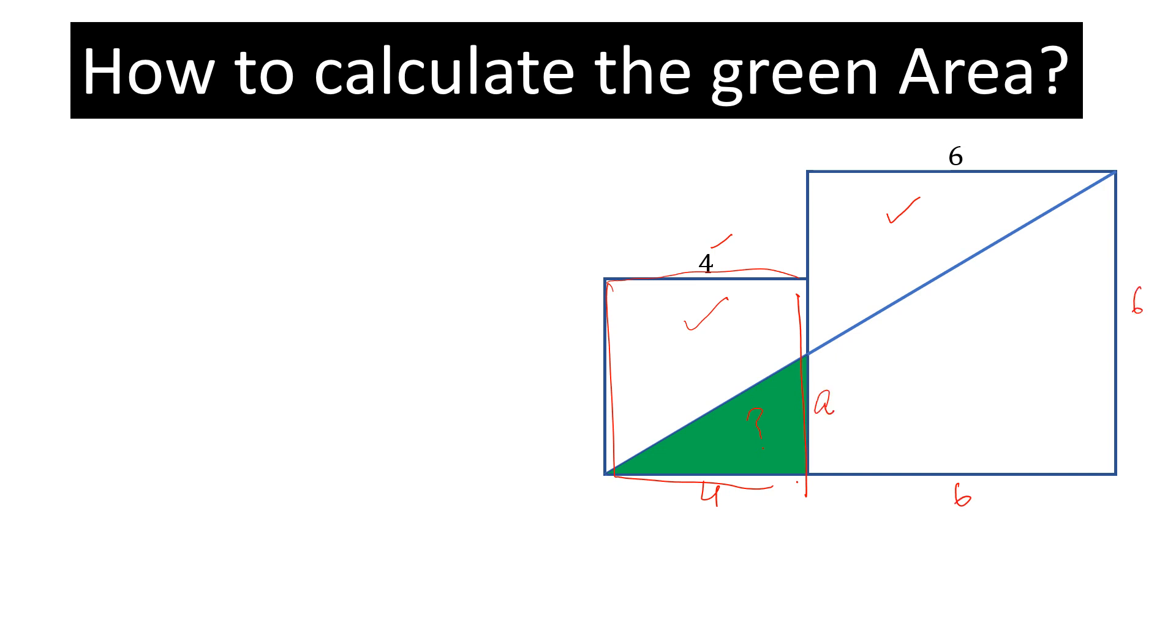Let this be A. So the area of the green triangle will be equal to half into 4 into A. Simplify this and we will get 2A.